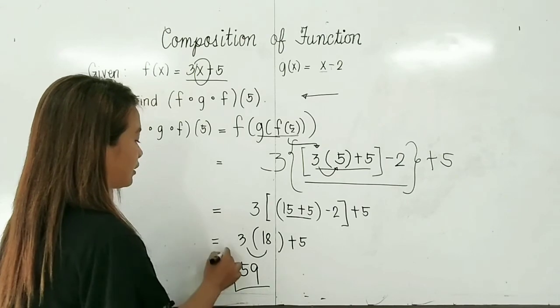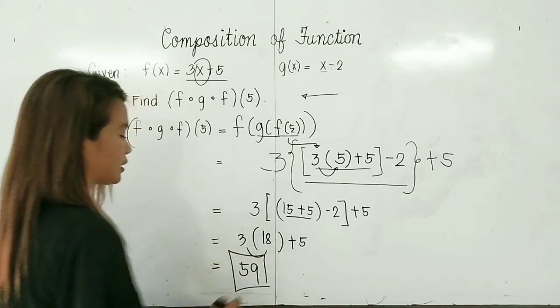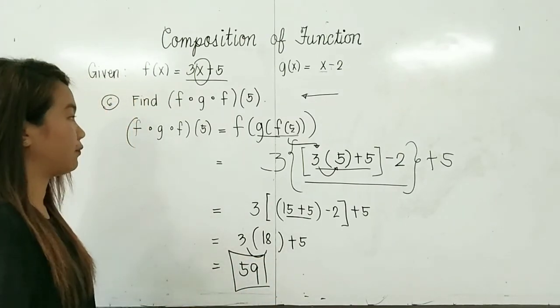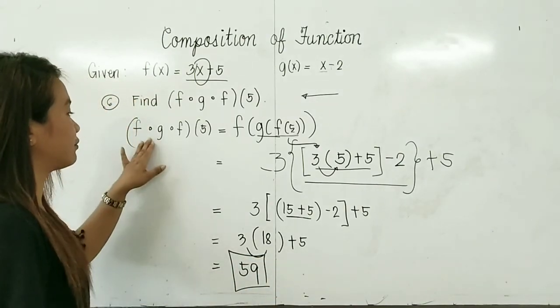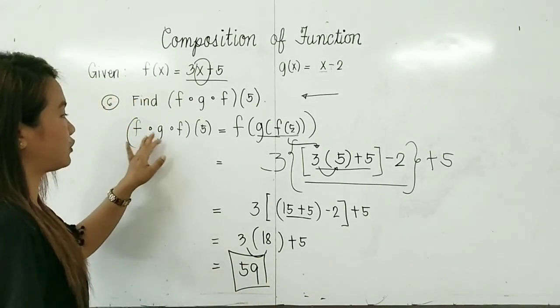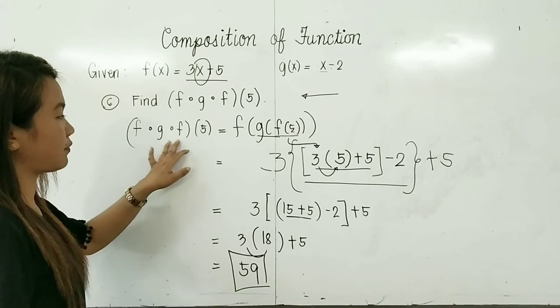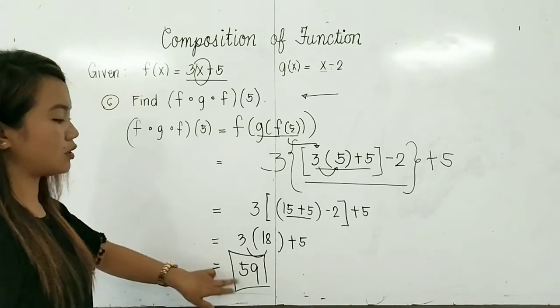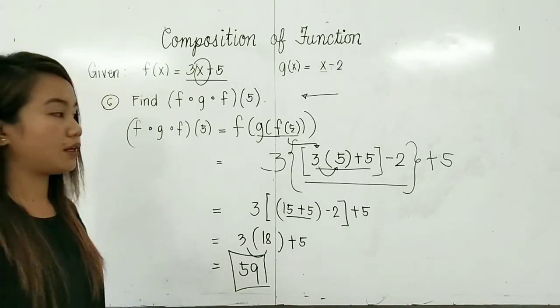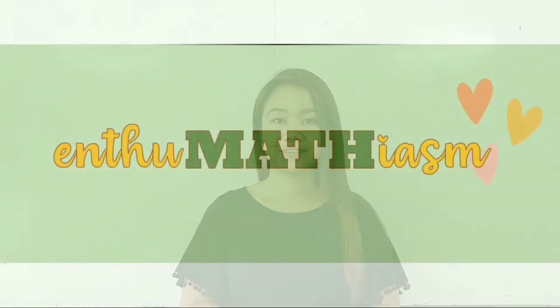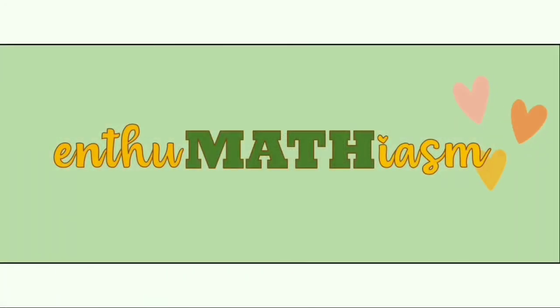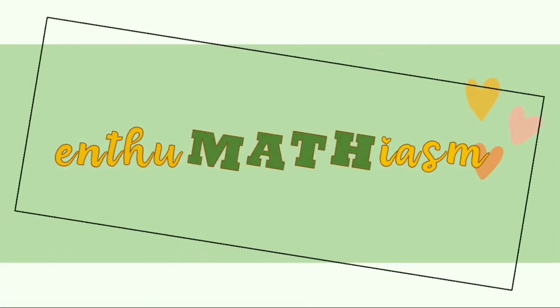So our final answer is 59. Therefore, f of g of f of 5 equals 59. That is how to solve for the composition of functions.